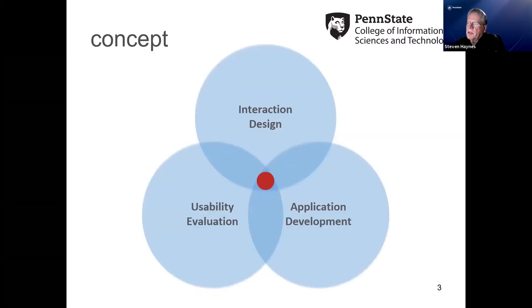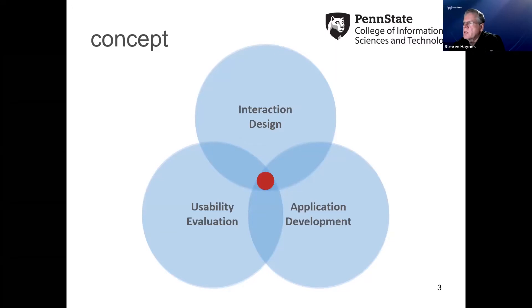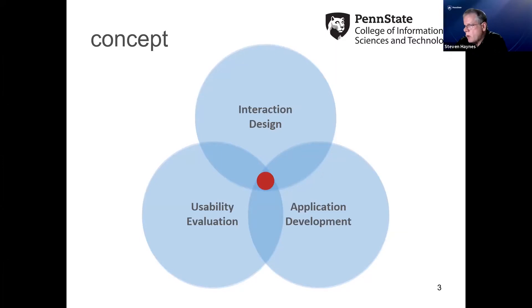This is a simpler graph showing the three major areas that come together in HCDD, with a sweet spot right in the middle. Students could end up at different points in this graph. Some might really focus on application development and go on to become software developers or software engineers. Others might gravitate towards interaction design and become front-end developers and web app developers. Others might focus more on usability evaluation, perhaps pairing with psychology, anthropology, or sociology to really focus on understanding people and their uses of technology.